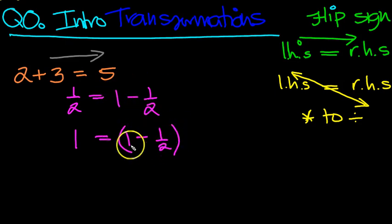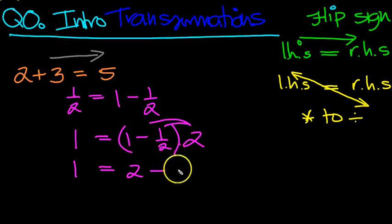And the 2 moves up to be multiplied by it. So it's 2 lots of that bracket. Using the rules for expansion then, we draw 2 lines as we did in the previous section. 2 ones are 2. 2 times minus 1 half is minus 1. 2 minus 1 is equal to 1.